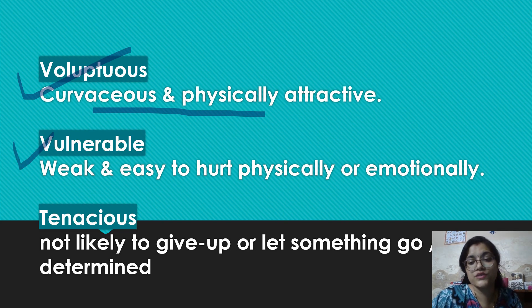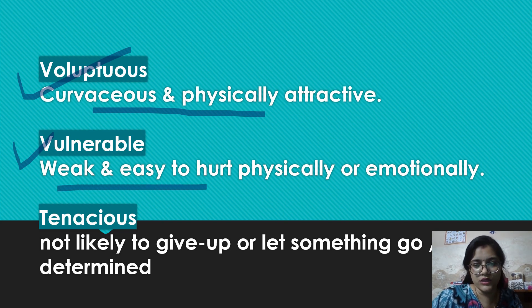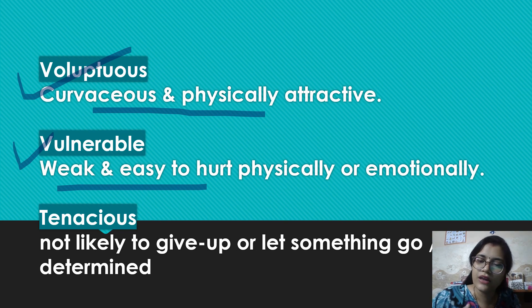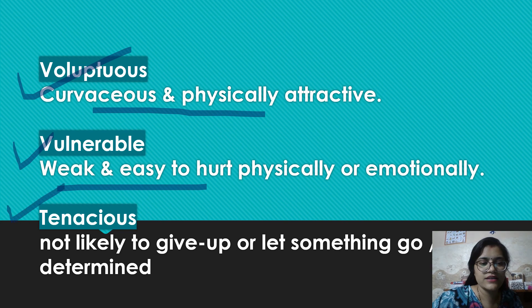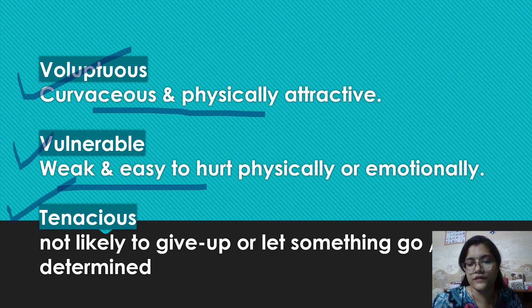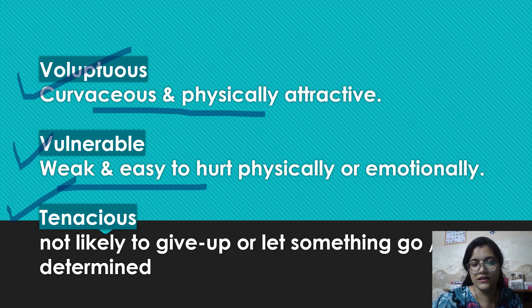Okay, next is vulnerable, which was used by Alia Bhatt in one of her interviews. So it means weak and easy to hurt physically or emotionally — someone jisko hurt karna bohut zyada aasaan hota hai, ya emotionally breakdown bohut zyada easily ho jaata hai, so we say that particular person is in the state of being vulnerable. Okay, next we have tenacious — tenacious ka matlab hota hai when you are very determined about something, that you are not going to give up or let something go, then you are going to use tenacious.